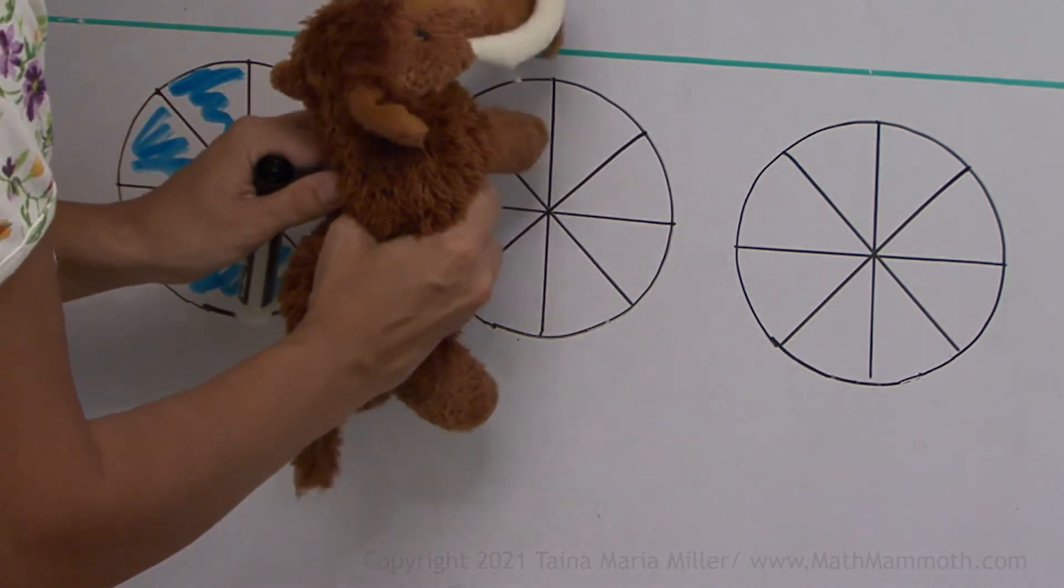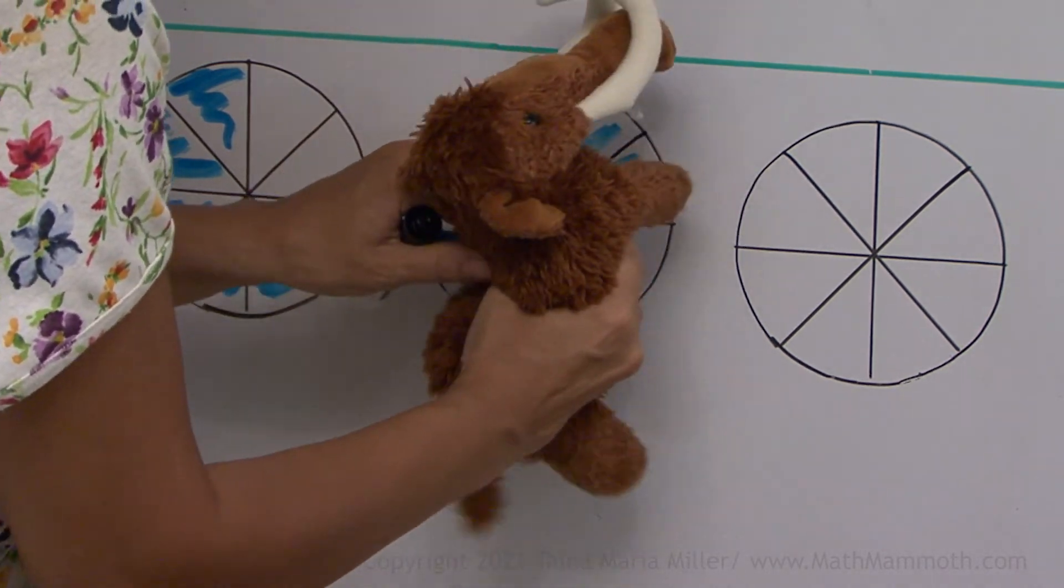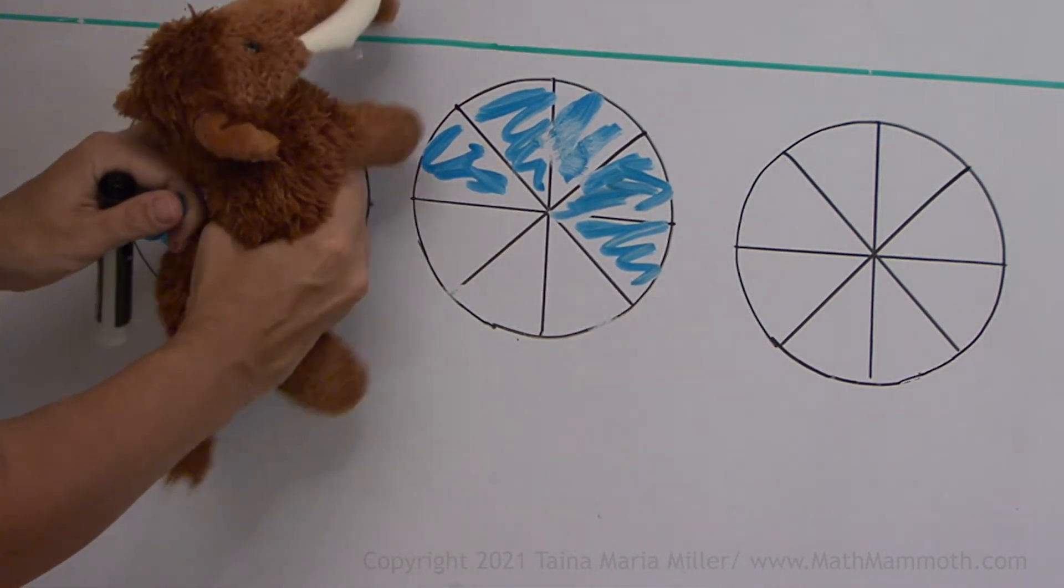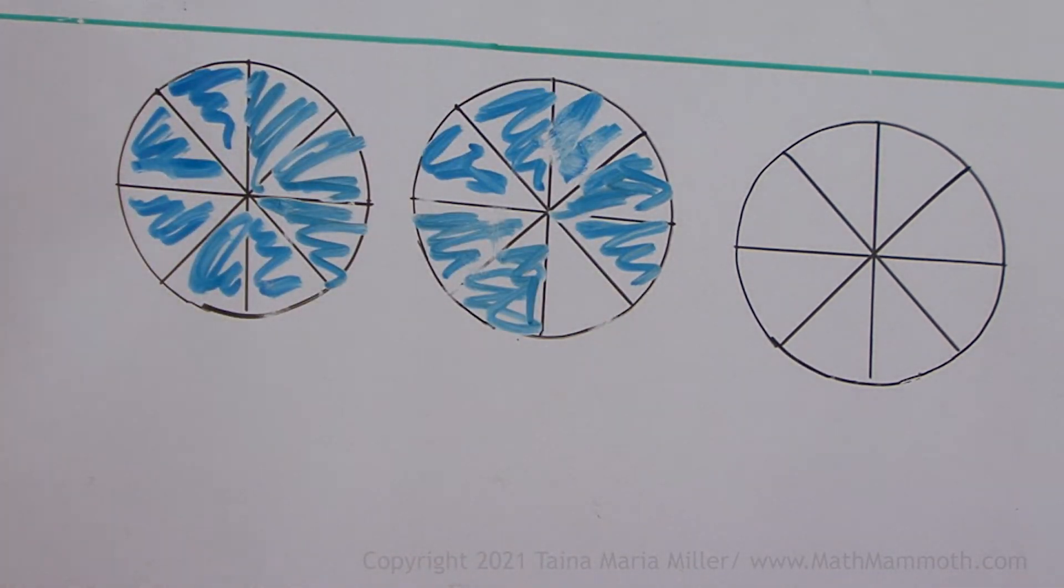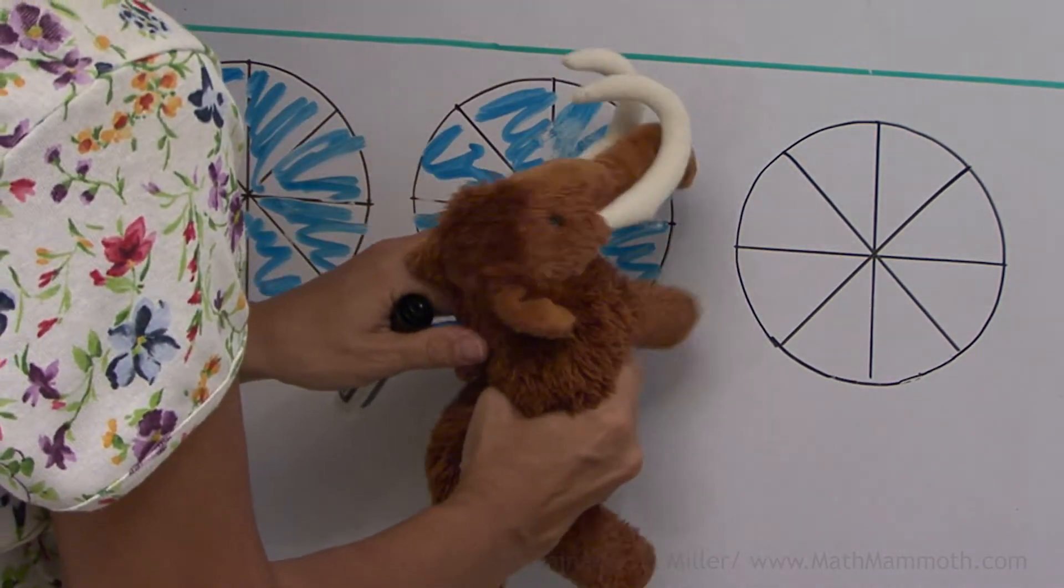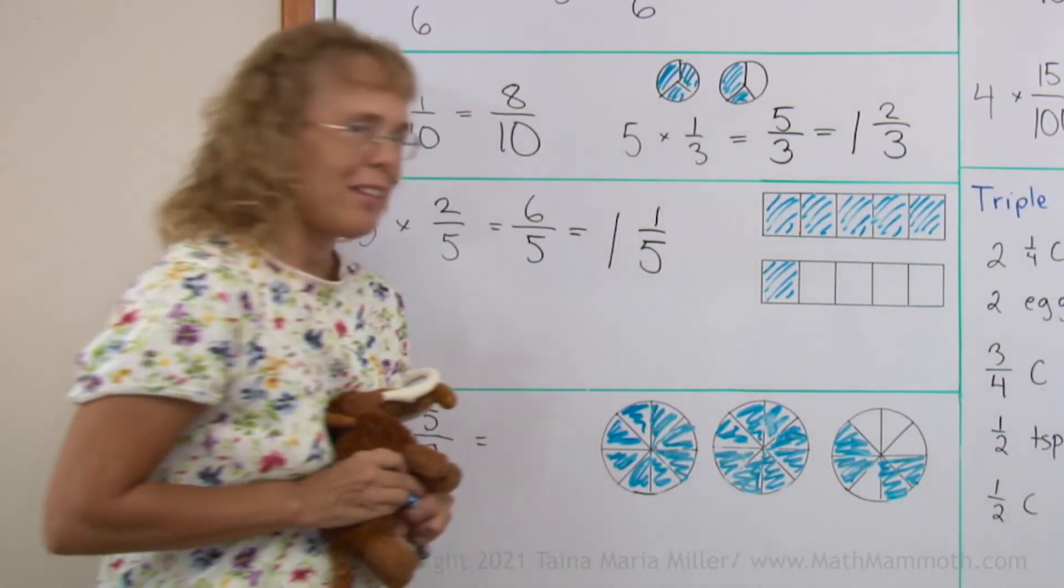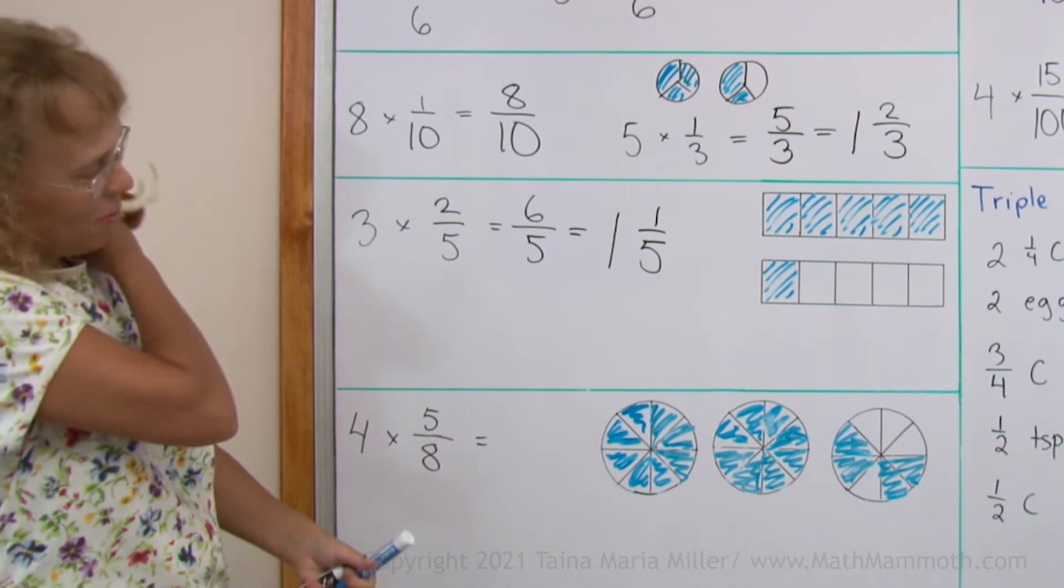There's 5 eighths. There's 2 times 5 eighths, and then the third time. And one last time, 5 eighths. Silly Mathie, but he did color. That's pretty good anyway.